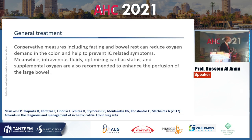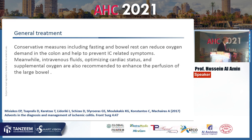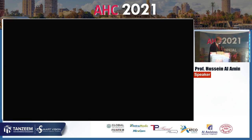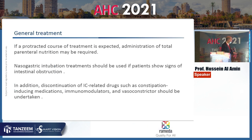Conservative measures include bowel rest, IV fluids, optimizing cardiac output, and supplemental oxygen to enhance intestinal perfusion. If a prolonged course is expected, total parenteral nutrition and nasogastric intubation in patients with obstruction are indicated. Ischemic colitis-related drugs should be discontinued.